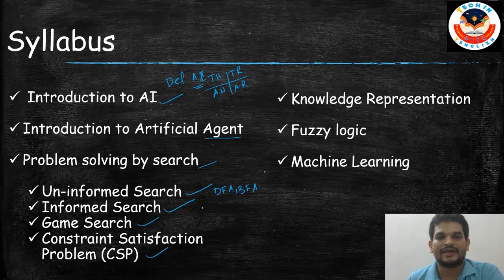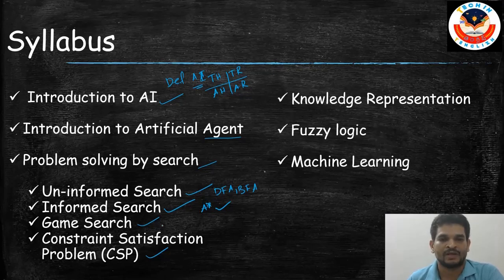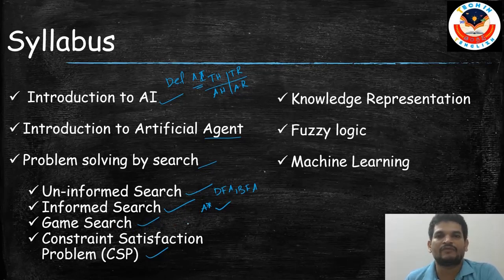In informed searching strategies, we will look at Greedy Search and A* — the most important one — and how we solve problems using A*. In game search, we will be looking at the Minimax problem and the Alpha-Beta Pruning problem. Constraint Satisfaction Problem will cover cryptarithmetic problems.